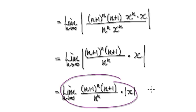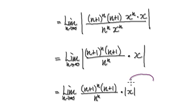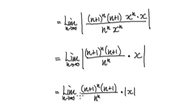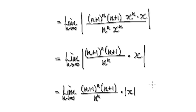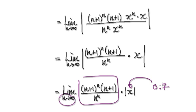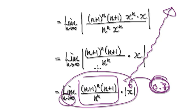Because we want this to be less than one, the only value you can put into x to make it less than one — if you put the number zero into this whole thing here, the limit as n heads towards infinity will equal zero. Zero is less than one, so the series will converge. If you put a number other than zero, say 0.7, as n heads towards infinity, this is going to get bigger and bigger. The whole thing will just diverge.